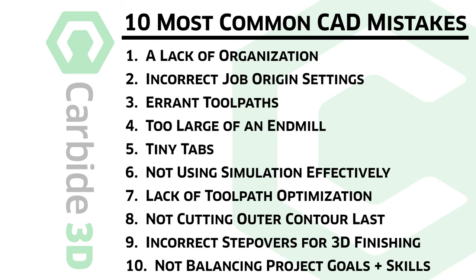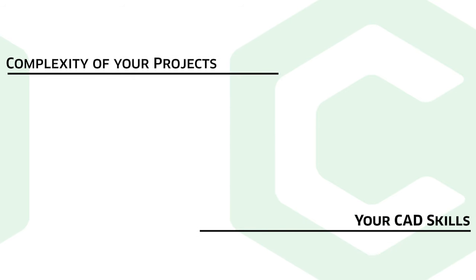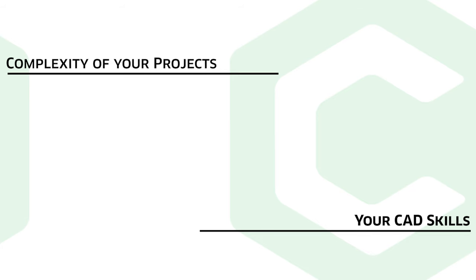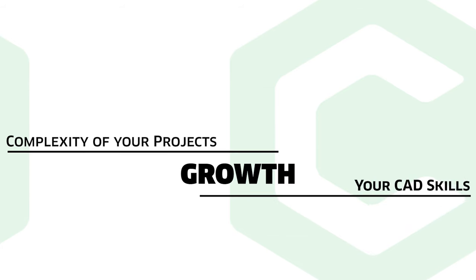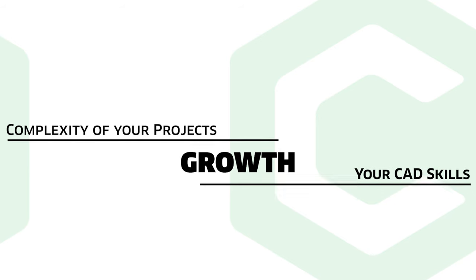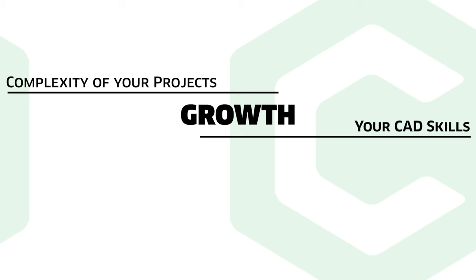Number 10 is a failure to balance your project goals with your design and tool pathing capabilities. Your understanding of the software absolutely matters as to whether something can be produced. You want to be pushing your abilities all the time, trying to get better, increasing the complexity and enjoyment of what it is that you're making. But sometimes that gap's a little too big and you have to think of strategies to shrink that gap back to a reasonable point where you can have success. So always balance those factors.